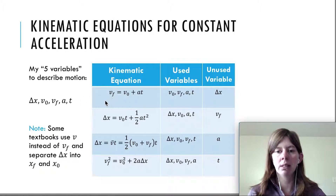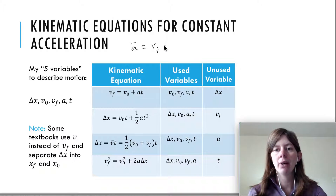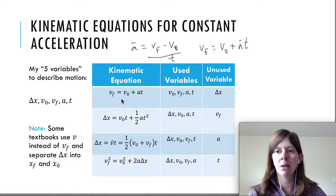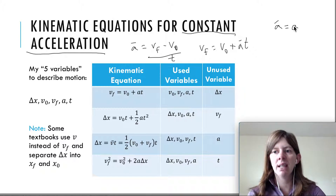We have four kinematic equations in this table, and they're actually derived from the equations we already know. Just to look at the first one quickly — the equation for average acceleration is change in velocity, so Vf minus Vi over T. If you multiply by time and add V initial, you get Vf equals V initial plus A times T. The only difference is that the average sign has been removed from the acceleration, because all of these equations apply for constant acceleration, meaning the average acceleration equals the instantaneous acceleration at any time.